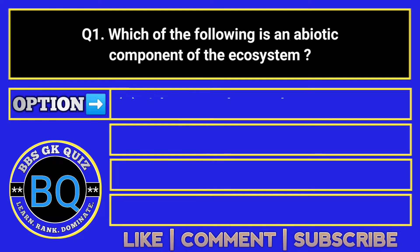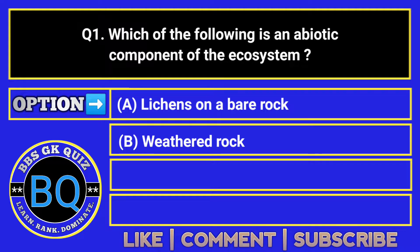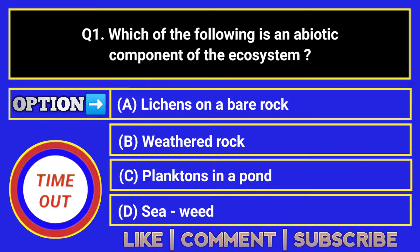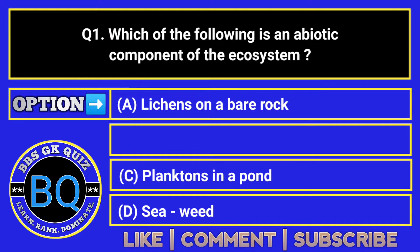Which of the following is an abiotic component of the ecosystem? The correct answer is option B.